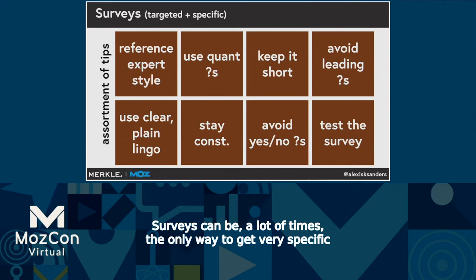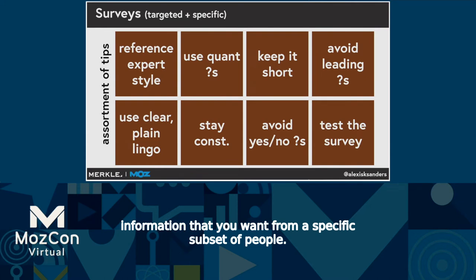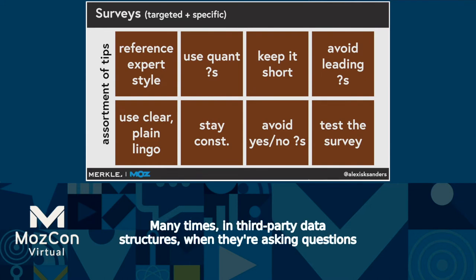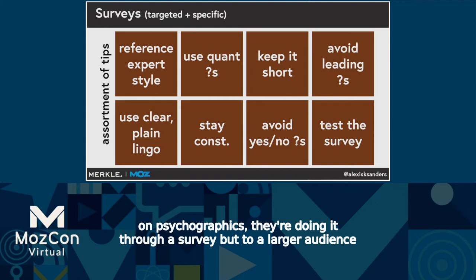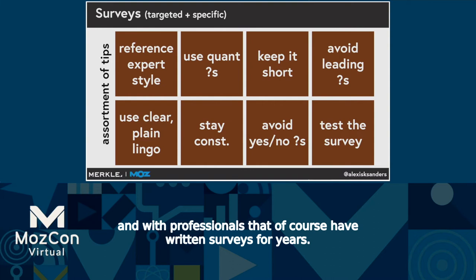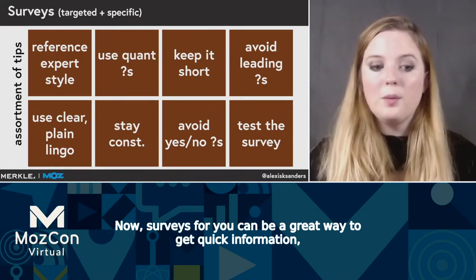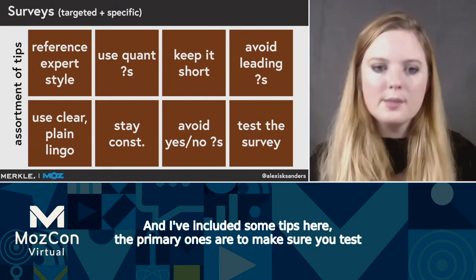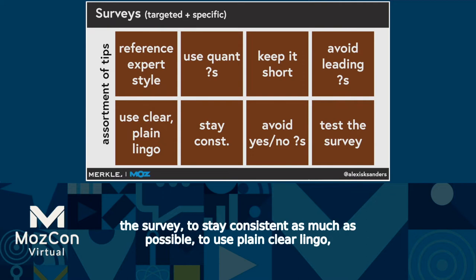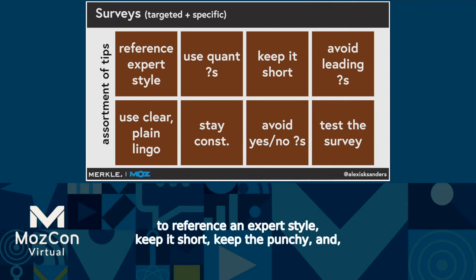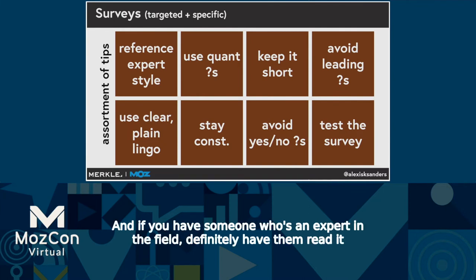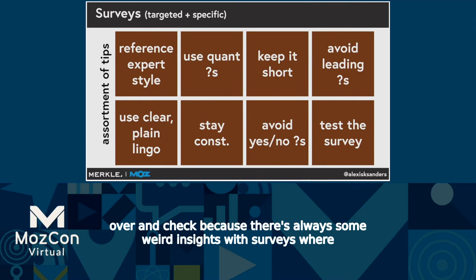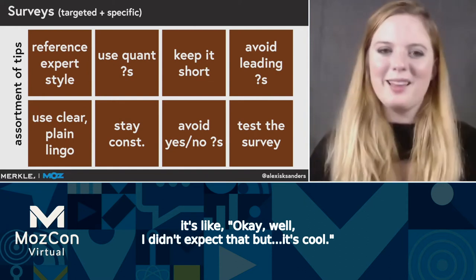Surveys can be a lot of times the only way to get very specific information that you want from a specific subset of people. Many times in third-party data structures, when they're asking questions on psychographics, they're doing it through a survey — but to a larger audience with professionals who have written surveys for years. Surveys for you can be a great way to get quick qualitative information. Some tips: make sure you test the survey, stay consistent, use plain clear language, reference an expert style, keep it short and punchy, and as much as possible avoid leading questions. If you have someone who's an expert in the field, have them read it over.